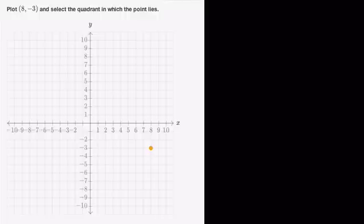Alright, in this video we're going to cover graphing points and naming quadrants. It's a Khan Academy exercise. Here they tell us to plot the point 8, negative 3 and select the quadrant in which the point lies.